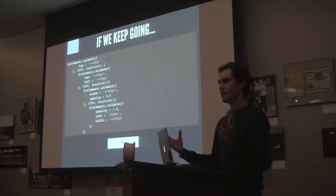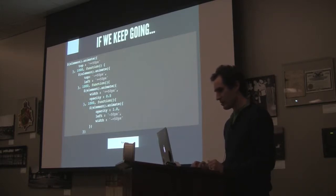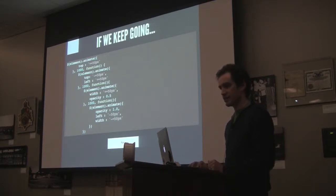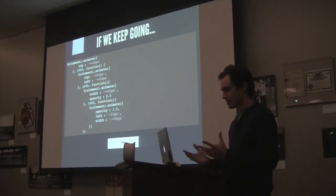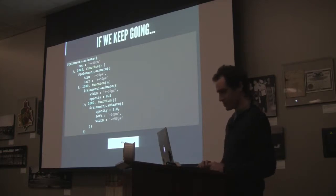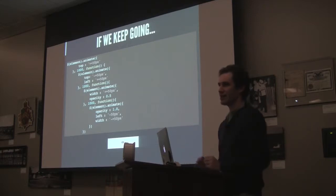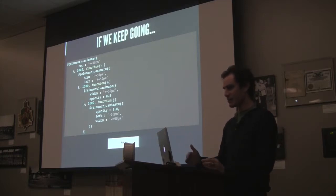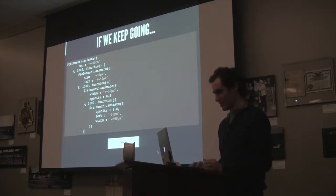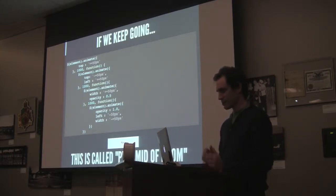Let's do the entire set of steps needed. We animate top, then go to top-left, then make it wide with opacity 0.5, and then go back. You'll see it works but there are some problems — we're going to the right a lot faster than we're going down. Reading this, I can see what's going on in terms of readability, but we're going to the right more than down. This is called the pyramid of doom.